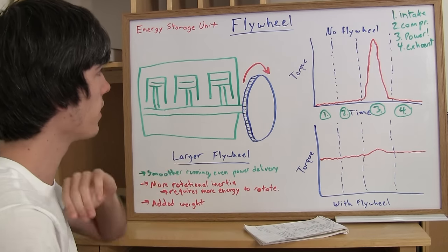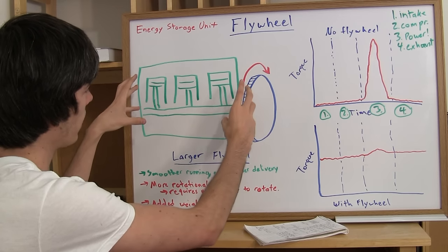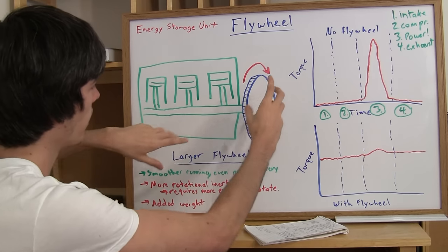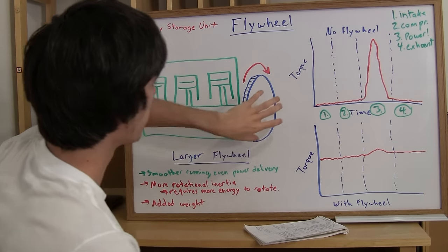So the same idea can be applied to cars. Cars have flywheels attached at the end of the engine or attached to the crankshaft, and it's the item that will be pressed against with the transmission.